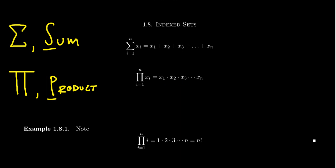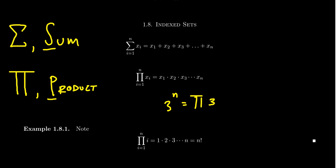We're actually quite used to the idea of products. Even if we haven't seen the pi notation before, we've probably seen n factorial. n factorial is the product of the number sequence i, as i ranges from 1 to n — which expands to 1 × 2 × 3 × 4 all the way up to n. When you think of an exponent, like 3 to the n, you could think of this as the product of the constant number 3 as i ranges from 1 to n. These repeated products show up all the time, just like repeated sums.